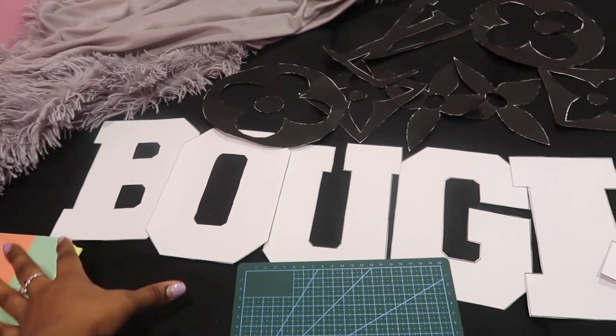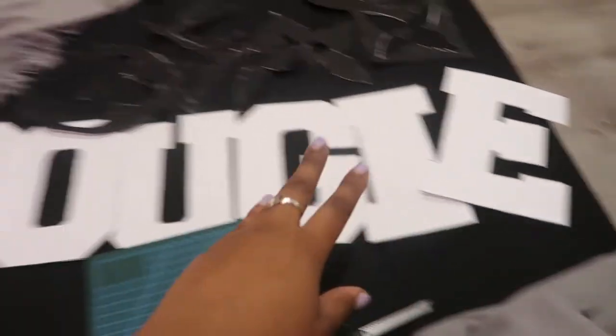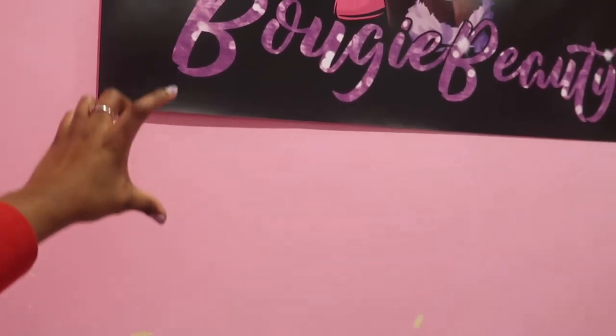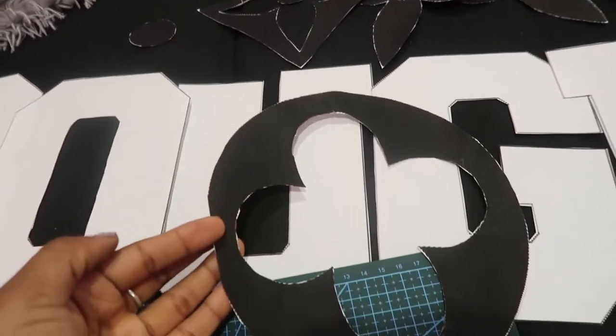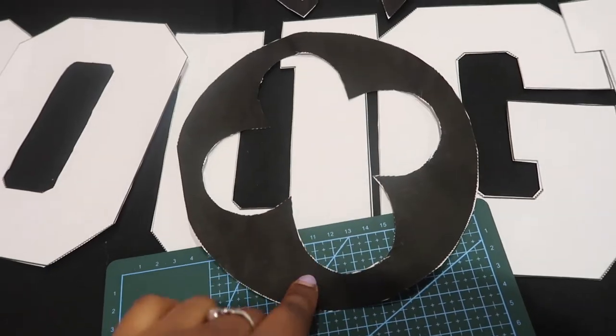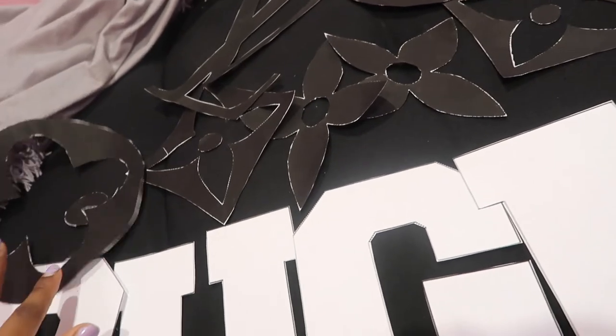I started by cutting out the words bougie, and I am going to be placing it in the middle of the wall and then had the Louis Vuitton sign surrounding the word bougie. I went ahead and literally just went on to Google and I found the Louis Vuitton prints, and I basically just cut those out.